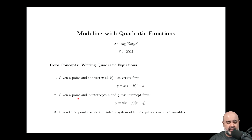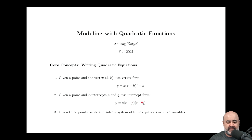On the other hand, if we're given a point and two x-intercepts instead of a vertex, we can use the intercept form. That equation is y equals a times the quantity x minus p — where p is the first x-intercept — times the quantity x minus q, where q is the second one.